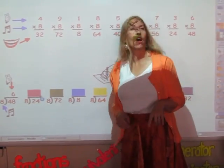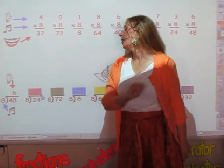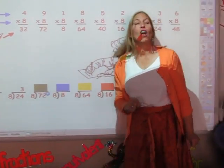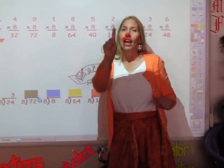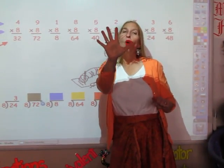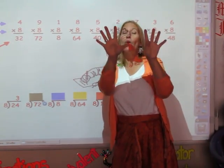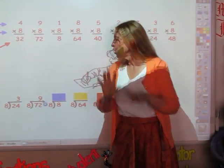I'm singing the eight song until I get to 24. 8, 16, 24. The answer is three. I'm going to sing the eight song until I get to 72. 8, 16, 24, 32, 40, 48, 56, 64, 72. The answer is nine.